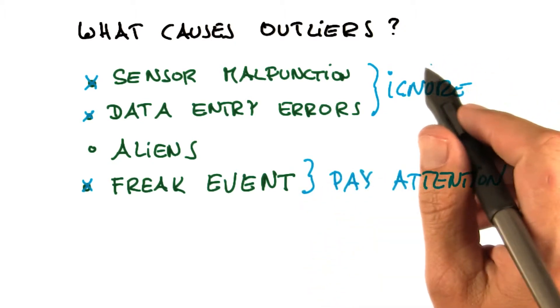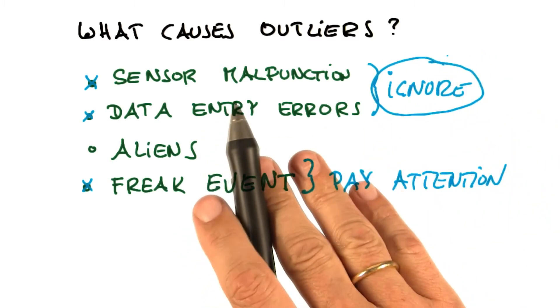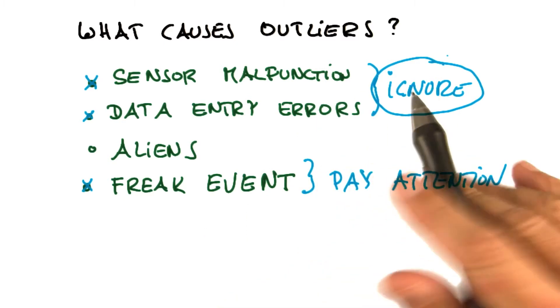So in much of machine learning, we try to ignore the outliers because they're often really caused by sensor malfunction. And when you overfit them, you get really bad results.